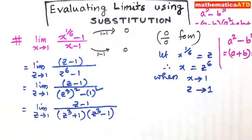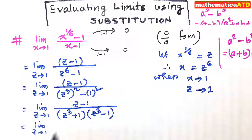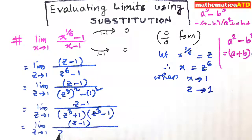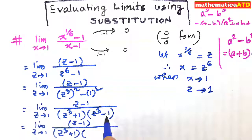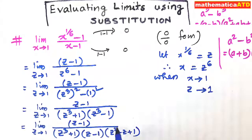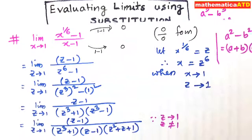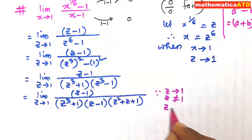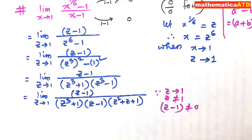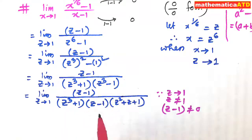We want to break z cube minus 1. We can write limit z tends to 1, z minus 1 divided by z cube plus 1 whole into z cube minus 1. Now z cube minus 1 is z cube minus 1 cube, so it can be written as z minus 1 whole into z square plus z plus 1. Since z is tending to 1, z is not equal to 1, so z minus 1 is not equal to 0. Since z minus 1 is a factor in the denominator and is not equal to 0, we can cancel z minus 1.